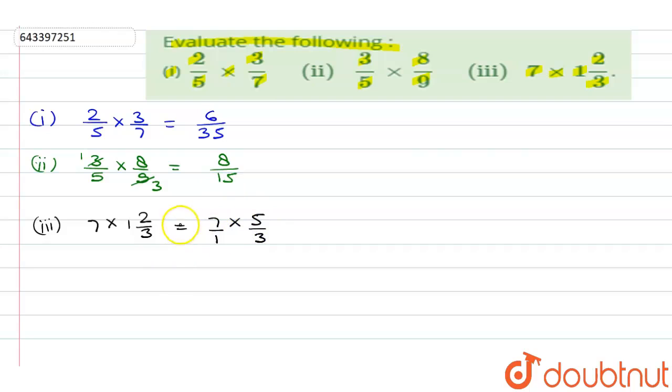Now we'll multiply: 7 times 5 is 35 upon 3. Since this is an improper fraction, we'll convert this improper fraction to mixed fraction. So it will be 11 2 upon 3.